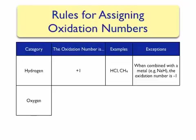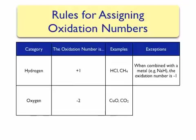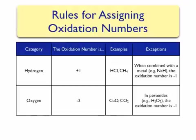The last rule is for oxygen. For most compounds, oxygen has a minus two oxidation number. In the ionic compound copper oxide, oxygen has a minus two charge and thus a minus two oxidation number. In the molecular compound carbon dioxide, oxygen also has a minus two oxidation number. There is an exception: if oxygen occurs in a peroxide — for example, hydrogen peroxide — the oxidation number for oxygen will be minus one.